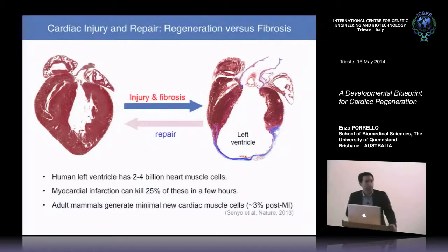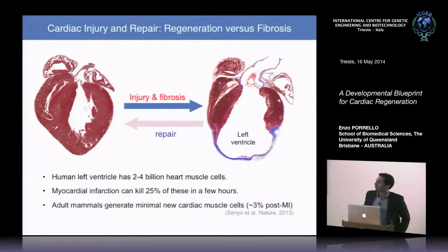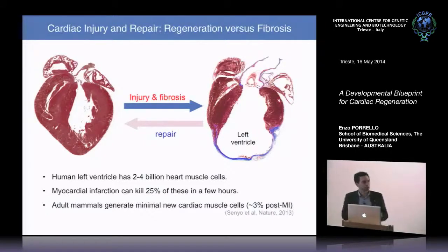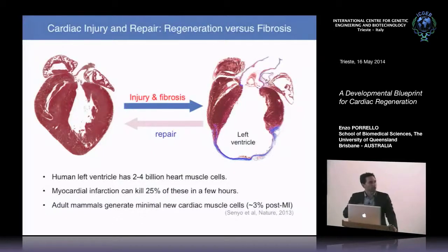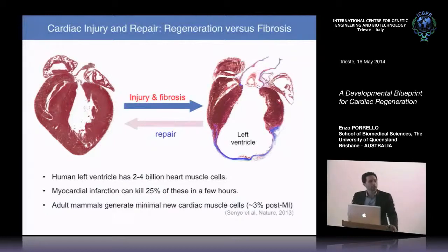So why are we interested in cardiac regeneration? It's known that the adult mammalian heart has an extremely limited capacity to regenerate following injury. Following a myocardial infarction, the adult human heart can lose up to a billion cardiomyocytes within just a few hours. The vast majority are not regenerated — current best estimates from Richard Lee's lab suggest only about 3% of cardiomyocytes are replenished following MI in adult mammals.